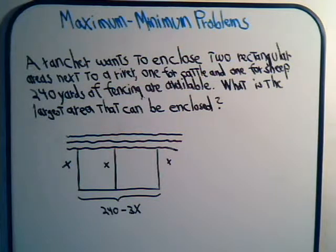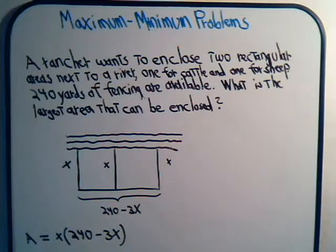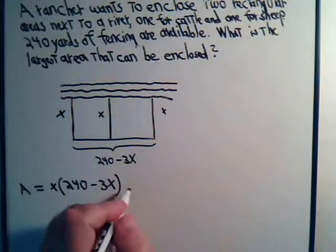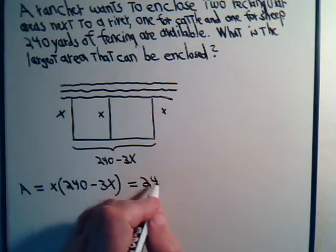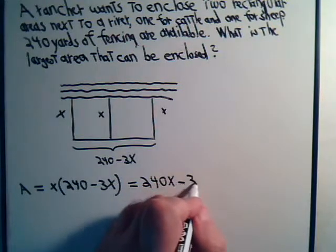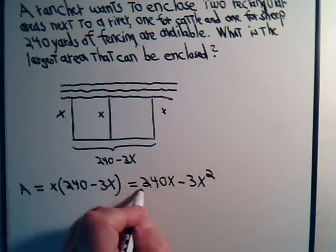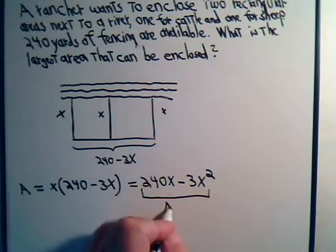And then we're supposed to find out what is the maximum area that can be enclosed. So, can we get a formula for area? That should be pretty simple. It would be this side times this. That would be the total area. So, the area will equal x times 240 minus 3x. Well, the area, we can just multiply it out, is 240 times x minus 3 times x squared. And that is the area.